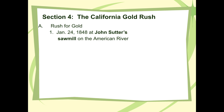Sutter does what any intelligent man would do — he takes them to an assayer. An assayer's job is to take a sample of a material or mineral and determine what it is: is it fool's gold or real gold? The assayer runs a couple of tests and says: where'd you get this? This is almost pure gold. They found the real thing. Sutter says: take me there, we've got to go now. And he gets gold fever.